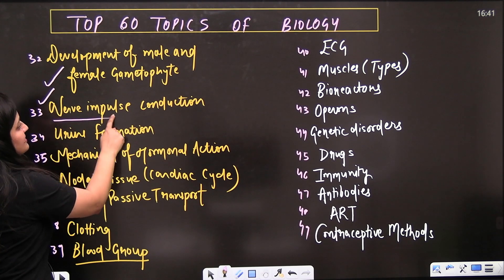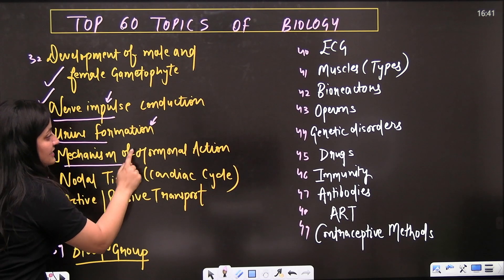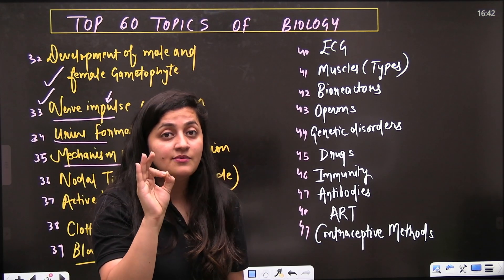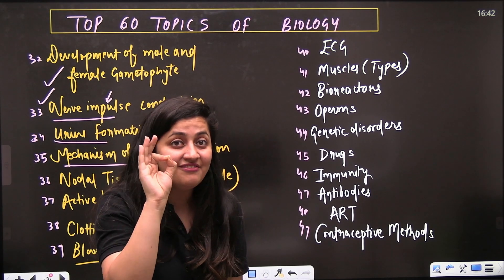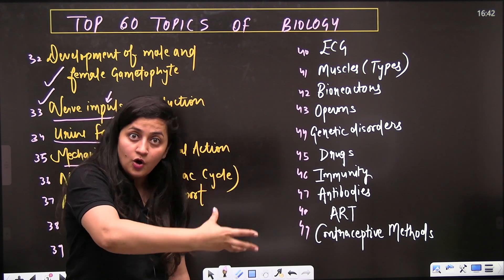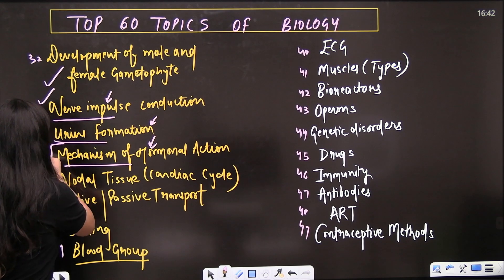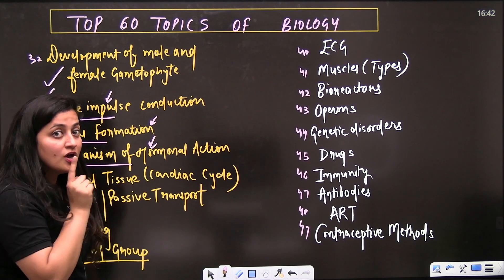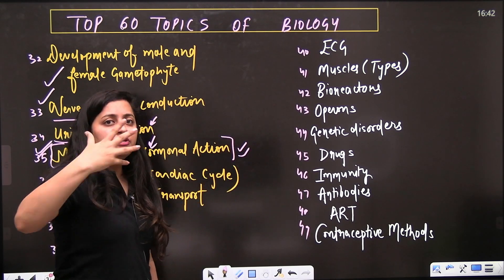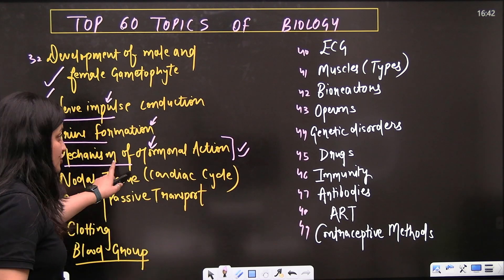Then comes nerve impulse conduction - again a very important topic. Urine formation from excretory products. Mechanism of hormonal action - students, this topic is very, very important. In this particular chapter, other hormones are also important, but above all, this topic is the most important topic. You are not allowed to leave this topic. If you revise this topic, you will get to know which hormones have their receptor inside the nucleus or on the plasma membrane. Just go for this particular topic.